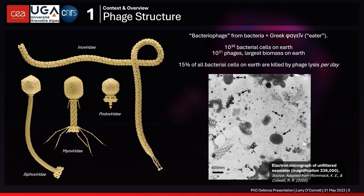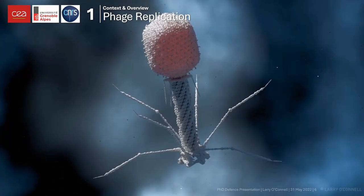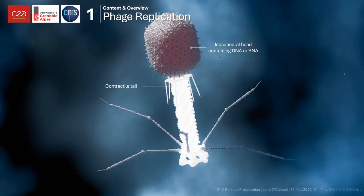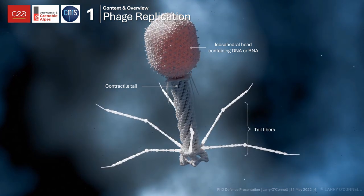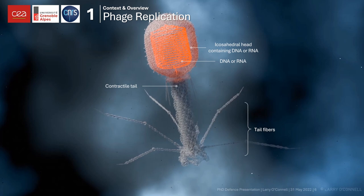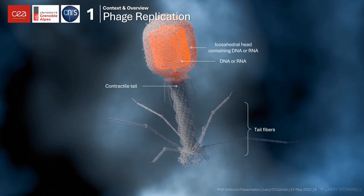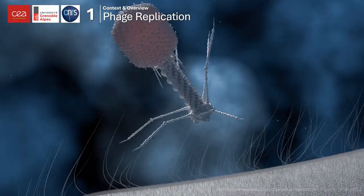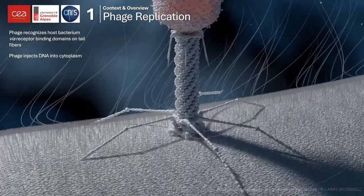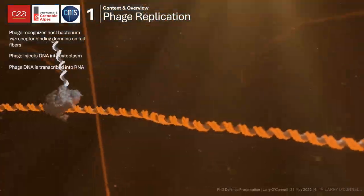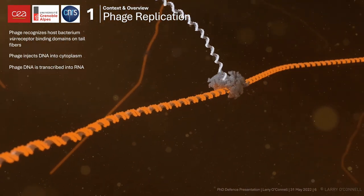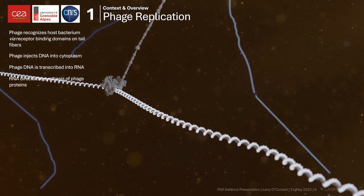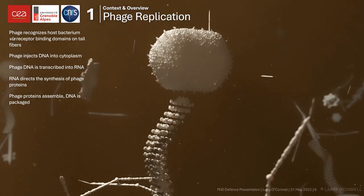A typical phage is composed of a head containing a genetic payload, a tail used to inject that payload, and tail fibers used to specifically recognize the host cell membrane. The first step in the lytic cycle involves the phage encountering the host bacterium, recognizing the cell surface via receptors, binding, and injecting the DNA payload. The DNA is transcribed into RNA, which directs the synthesis of viral proteins. These phage proteins and DNA are then assembled and packaged into new phage particles inside the bacterial cell.